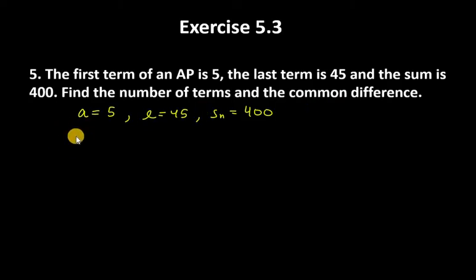First, we'll find n using the Sn formula: Sn equals n over 2 times a plus l. Sn is 400, and we don't know n yet.